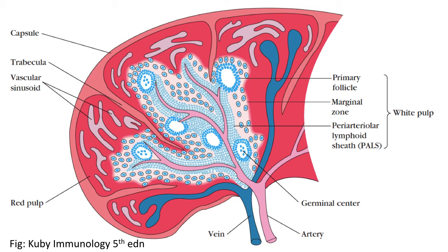The artery that brings blood to the spleen empties the blood in the marginal zone where dendritic cells are present. Within the marginal zone, the dendritic cells capture the antigen and express the antigen with class 2 MHC molecules on the surface, which leads to the activation of the T cells present in the periarteriolar lymphoid sheath, the PALS.